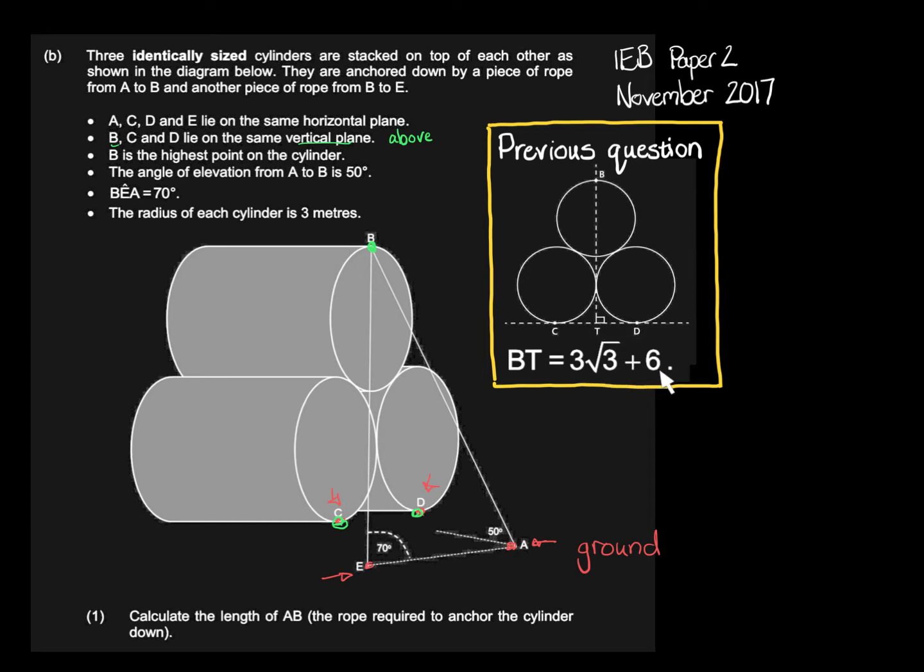In the previous question we proved that from the top of the circle to ground level it had a length of 3√3 + 6. The reason they asked the question like that in 12A is so that we can use that information when doing 12B. So even if you didn't get the answer for 12A, use what's been given already.